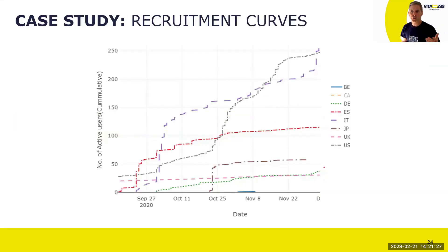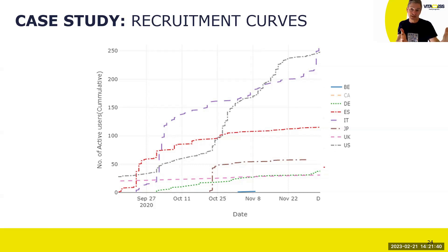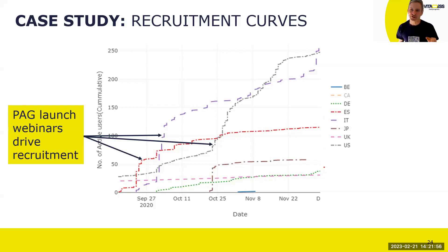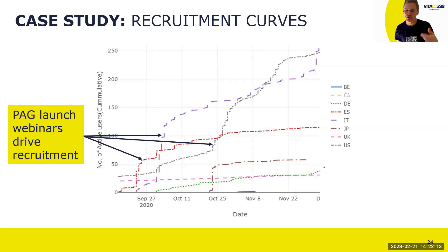Here are recruitment curves from an international global multilingual study — US, Canada, across Europe, and Japan. The curves show cumulative participants by country. Country launches were phased, and we worked closely with patient advocacy groups who raised awareness in their respective countries. When you annotate the graph, you can see that when a patient advocacy group held a webinar to announce the study launch in their country, there's a nice uptick in recruitment. Looking at this closely as you go along is really worthwhile.